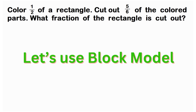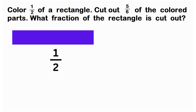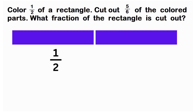Gagamitan muna natin ang block model. We have the first figure, which is actually one half of the rectangle. So, ibig sabihin one half ito, then may another one half. Since the second statement says five sixths of the colored parts, i-divide ko muna itong rectangle by six per figure. So itong one half, i-divide ko yan by six.